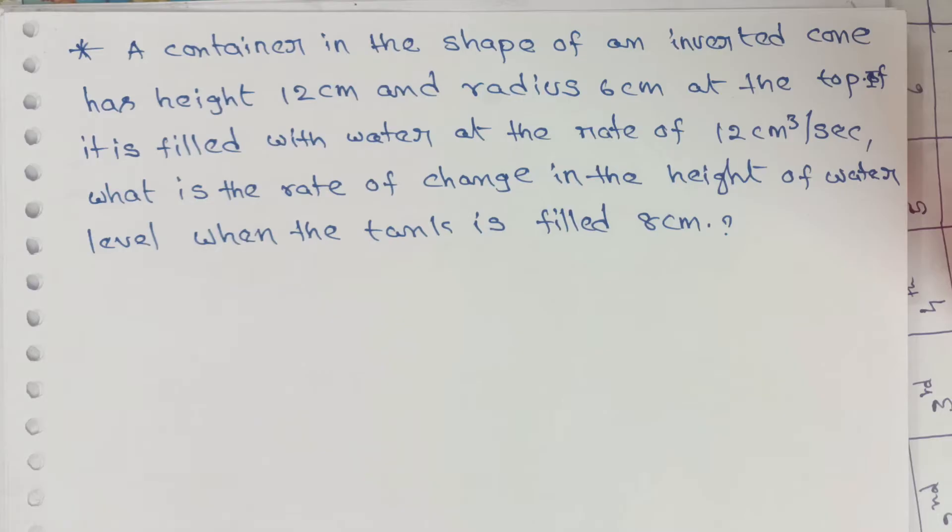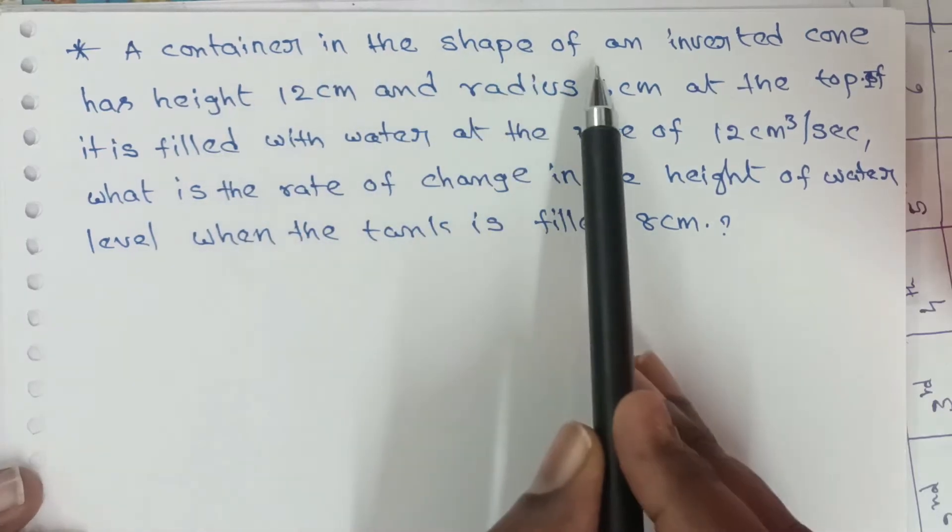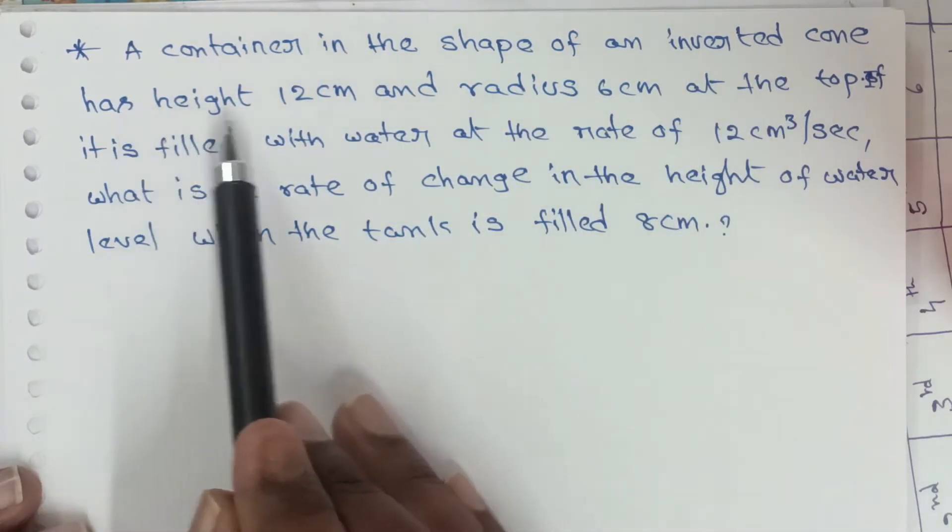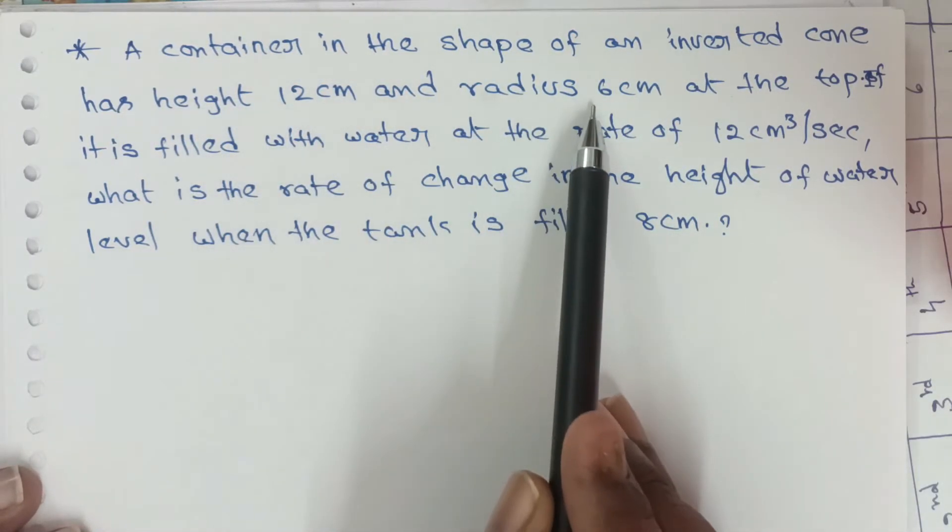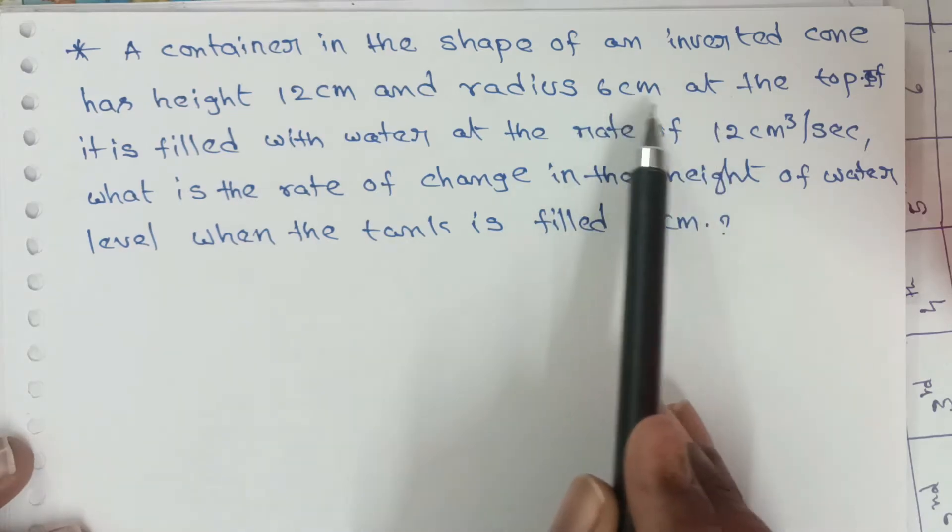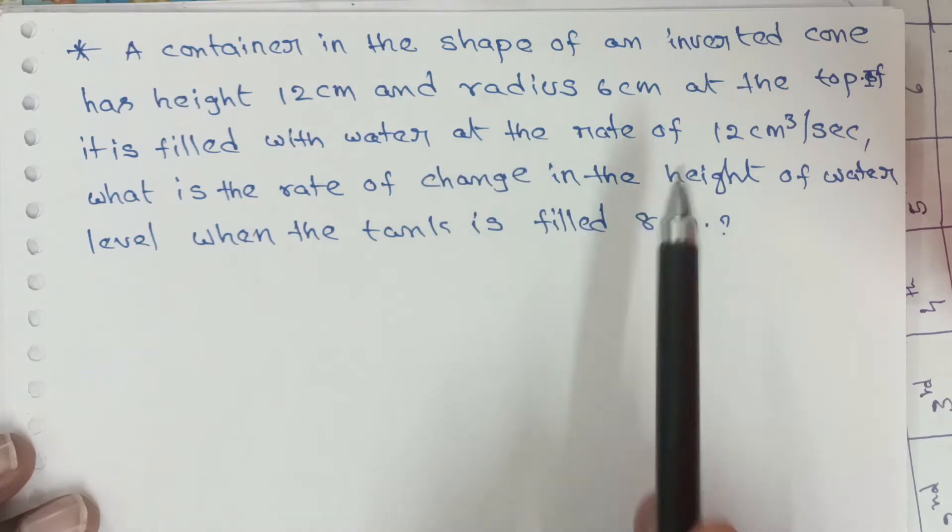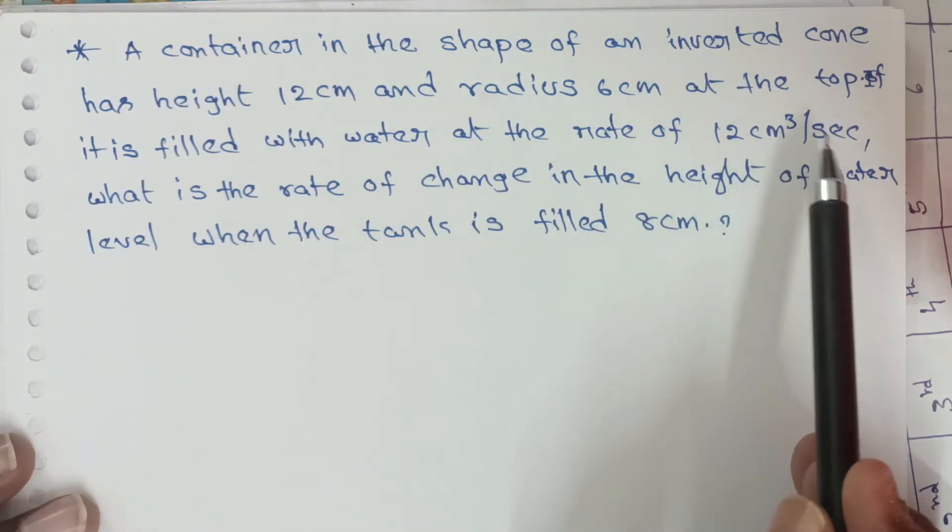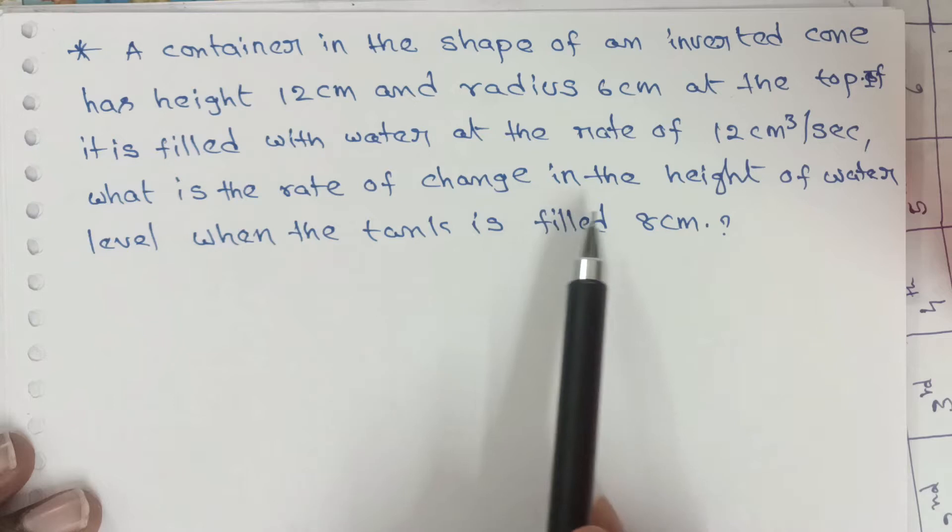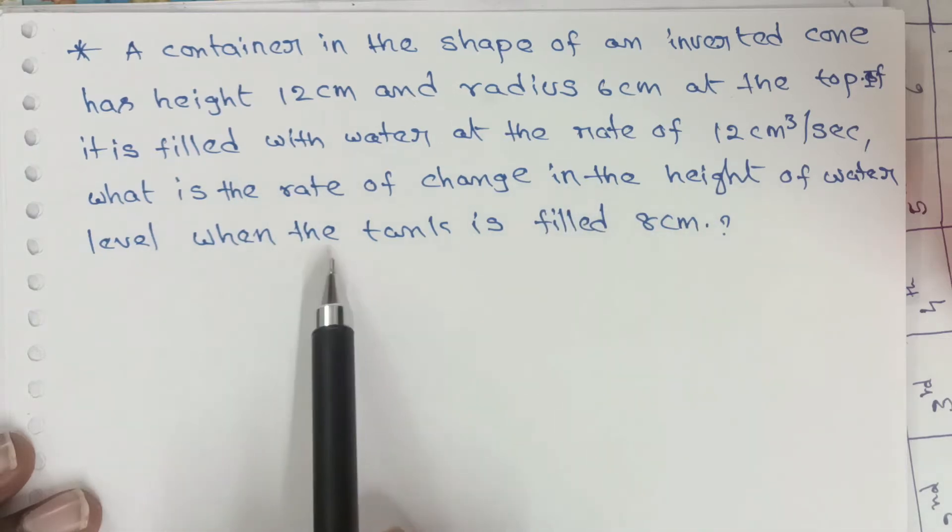Rate measure topic - a very important short answer question. A container in the shape of an inverted cone has height 12 cm and radius 6 cm at the top. If it is filled with water at the rate of 12 cm³/sec, what is the rate of change in the height of water level when the tank is filled 8 cm?